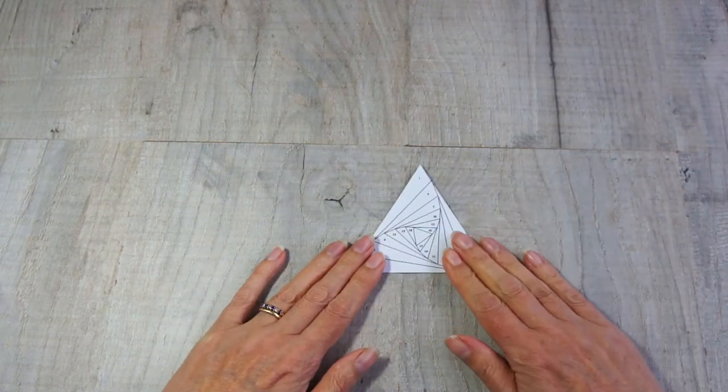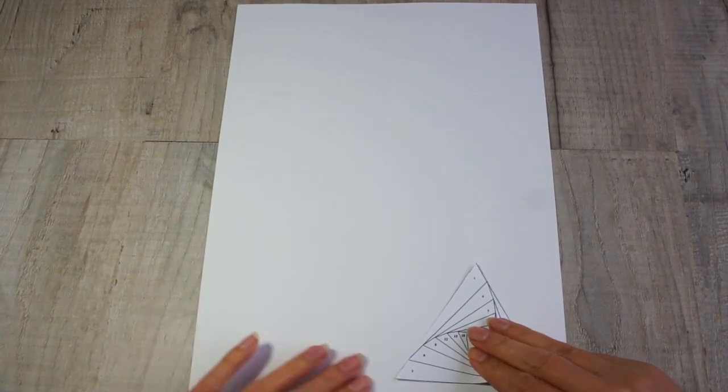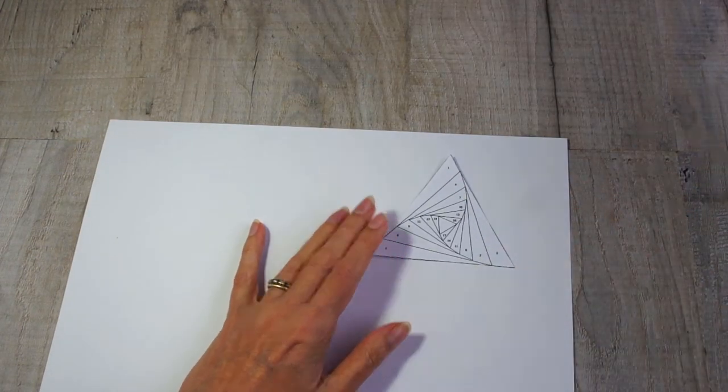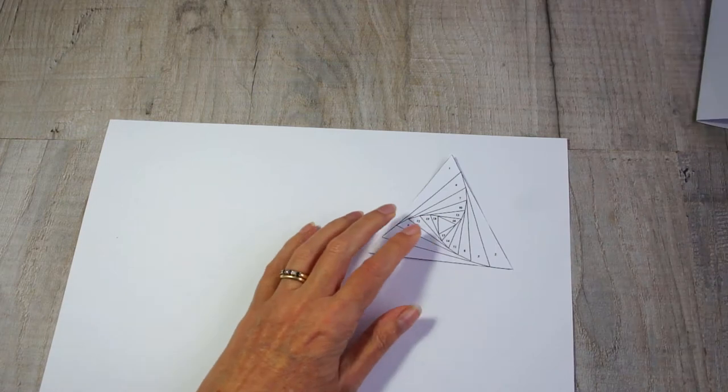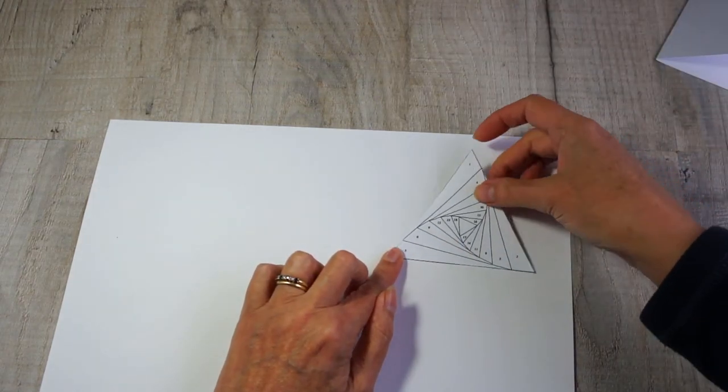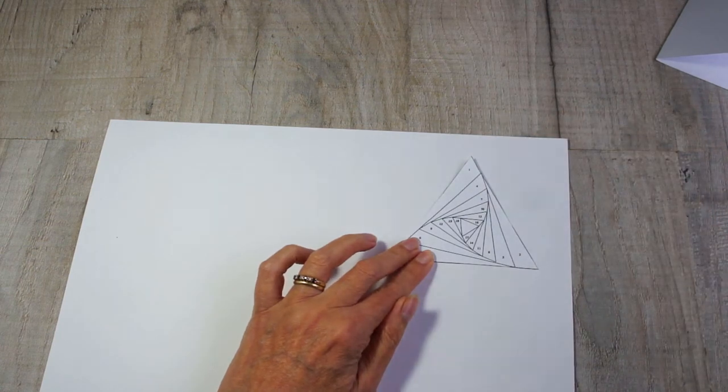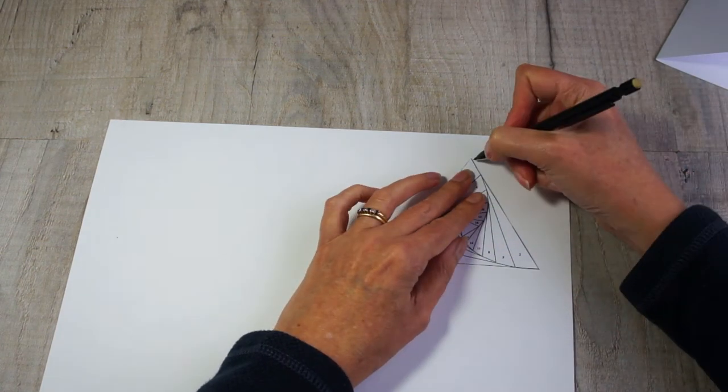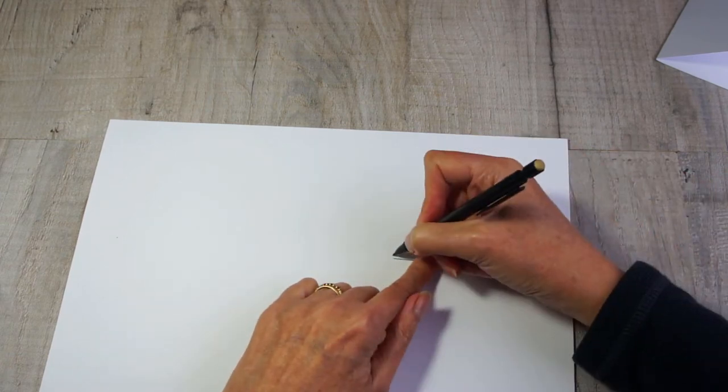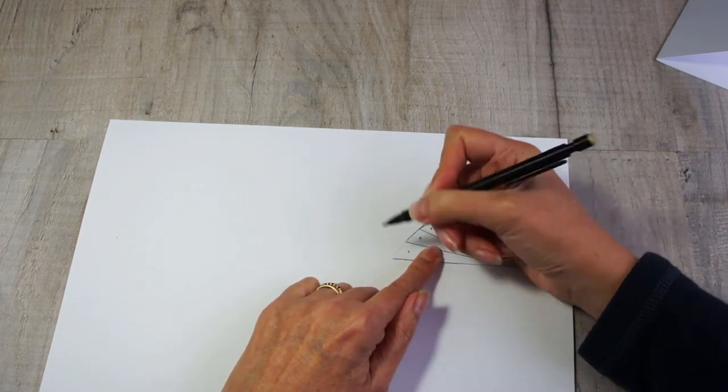You're going to use this to draw it onto your card. So you're just going to draw around the shape. Now in this case, it's a simple triangle, but it could be a complex shape like a butterfly or some other creature or animal. So position it where you would like on your card.